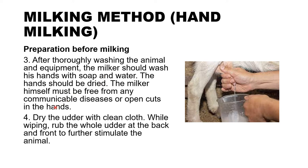After all the washing and cleaning, dry the udder with a clean cloth — the cloth itself must also be clean. While wiping, rub the whole udder at the back and front to further stimulate the animal for milk letdown. This washing and rubbing process stimulates the milk letdown, making the milking process easier and more efficient.